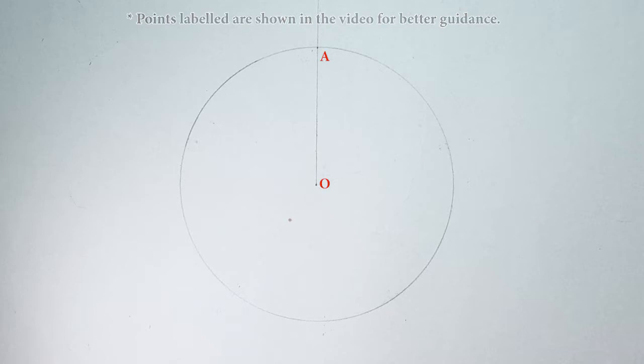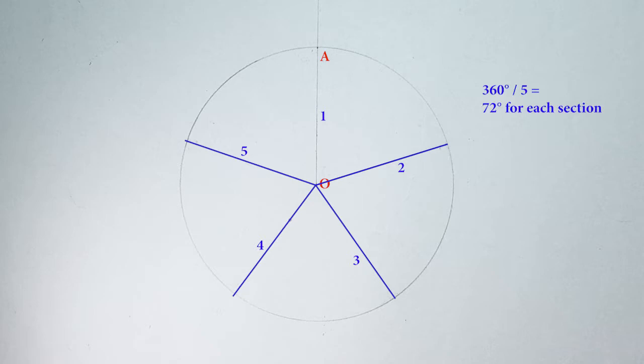Now, we're going to divide the circle into 5 equal parts by dividing 360 degrees with 5, so 72 degrees for each part.